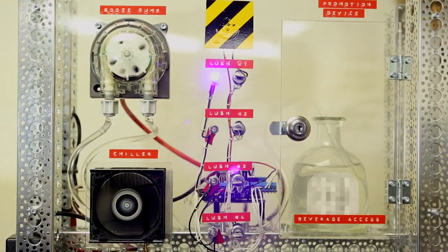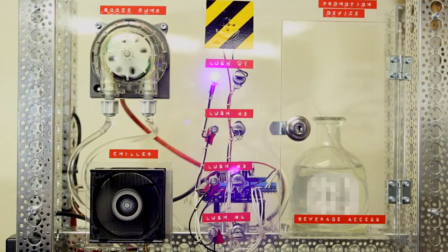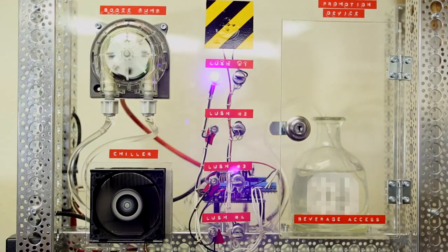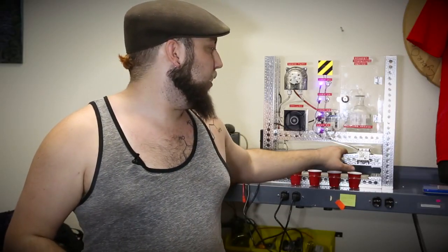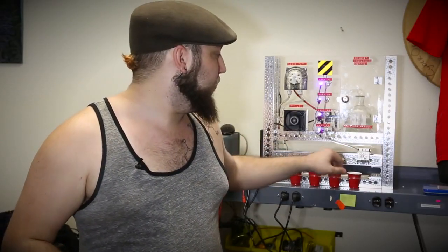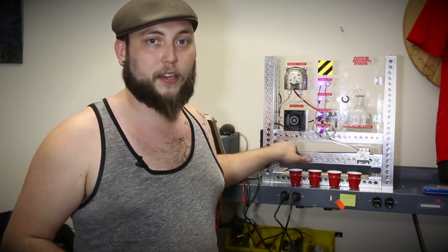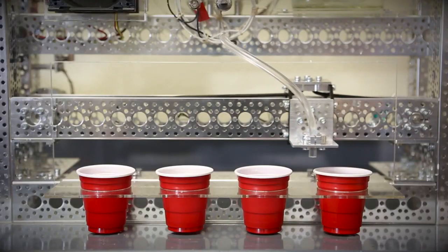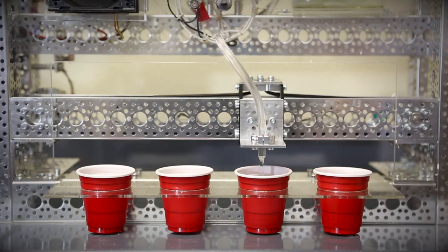The frame is made out of Actobotics parts, which provide a nice stable structure for everything to work inside of. I use the Actobotics smooth belt and motor mounts to create this linear actuator so that I can move the pour spout along the bottom where the cups are lined up.